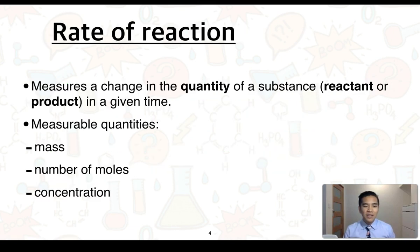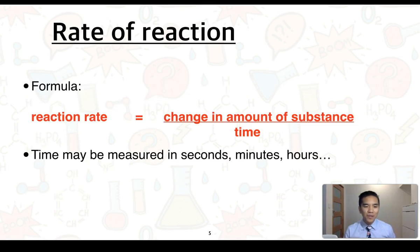The rate of a reaction essentially measures a change in the quantity of a substance, so that could be a change in a reactant or product in a given time. In terms of quantities we could be looking at measuring its mass, the number of moles or even its concentration. We can define a simple formula for reaction rate. So the reaction rate is equal to the change in the amount of a substance which could be mass, moles or concentration in a given amount of time or per unit of time. This time can be measured in things like seconds, minutes, hours.